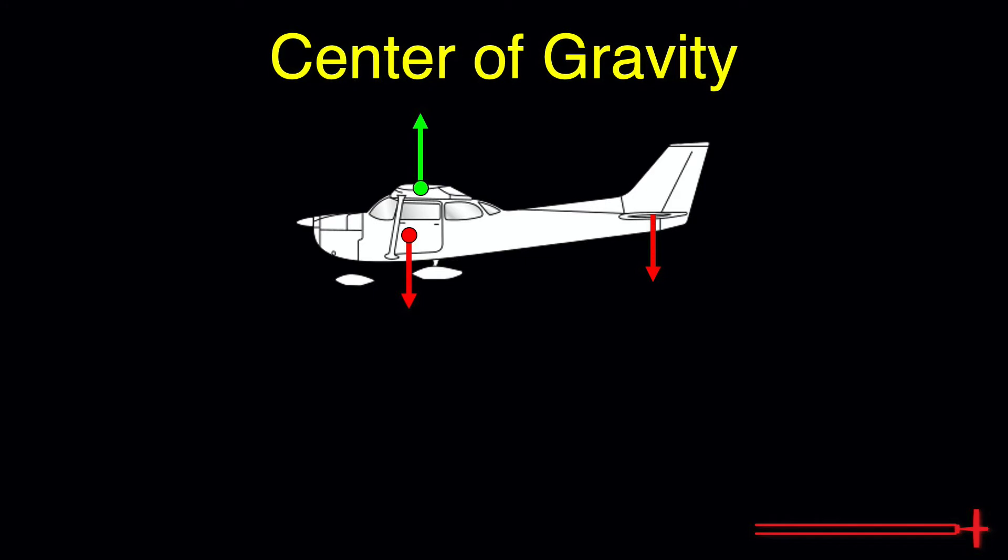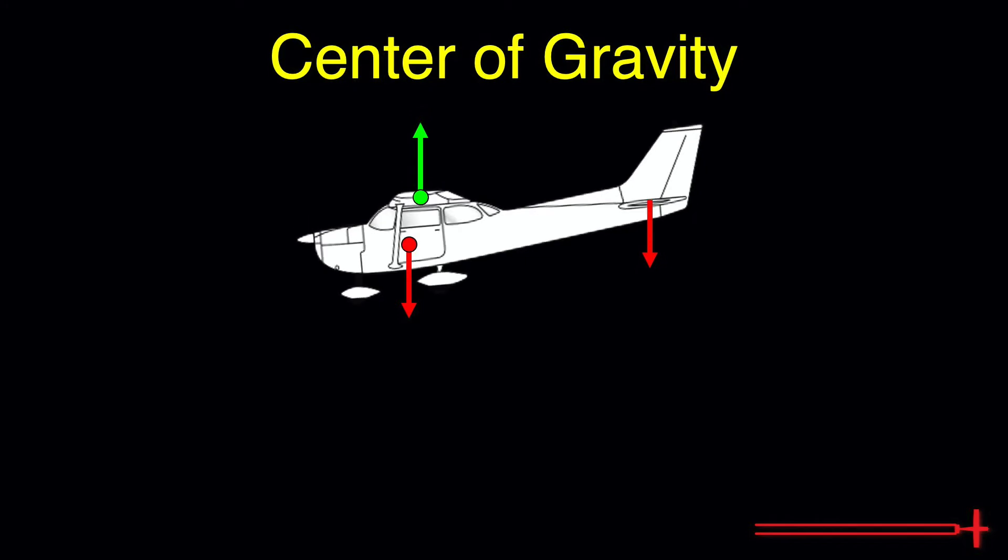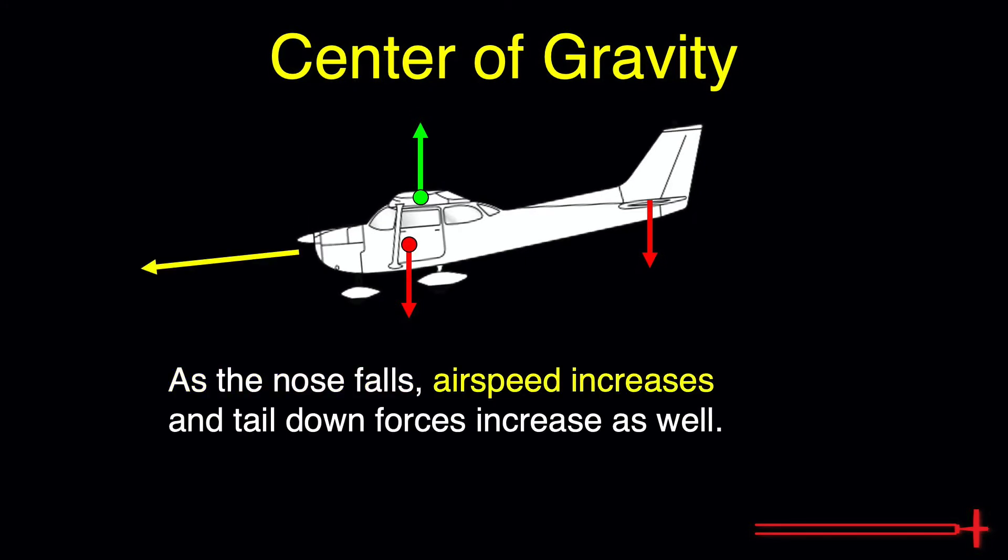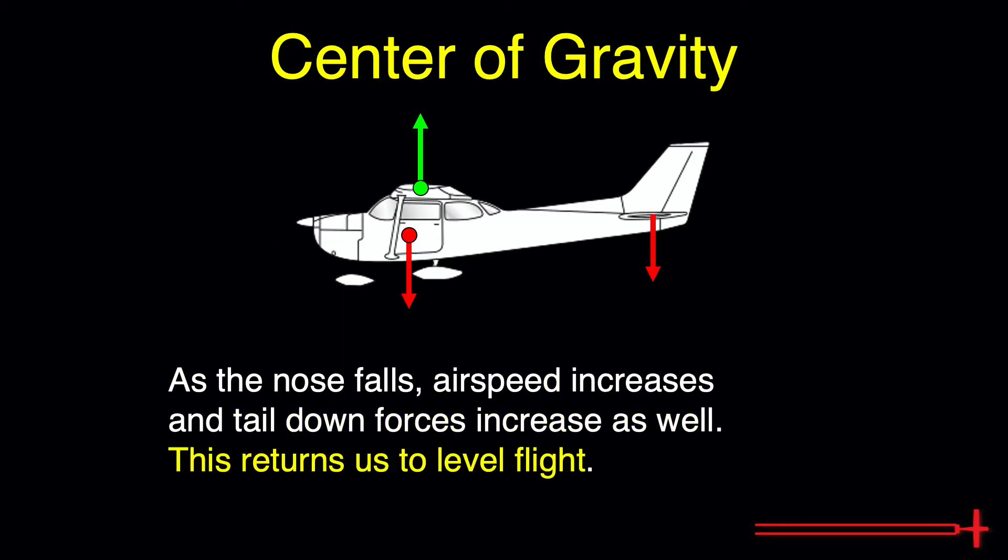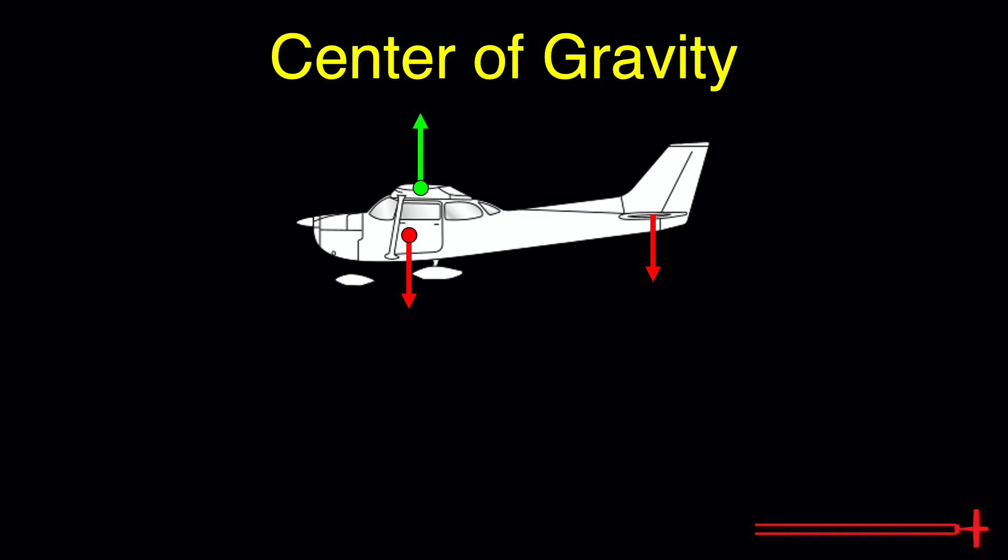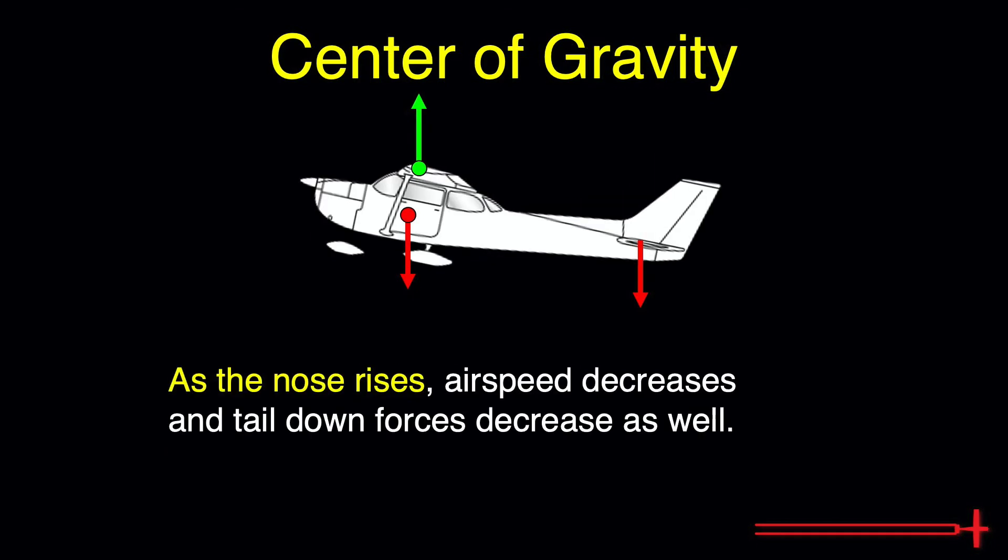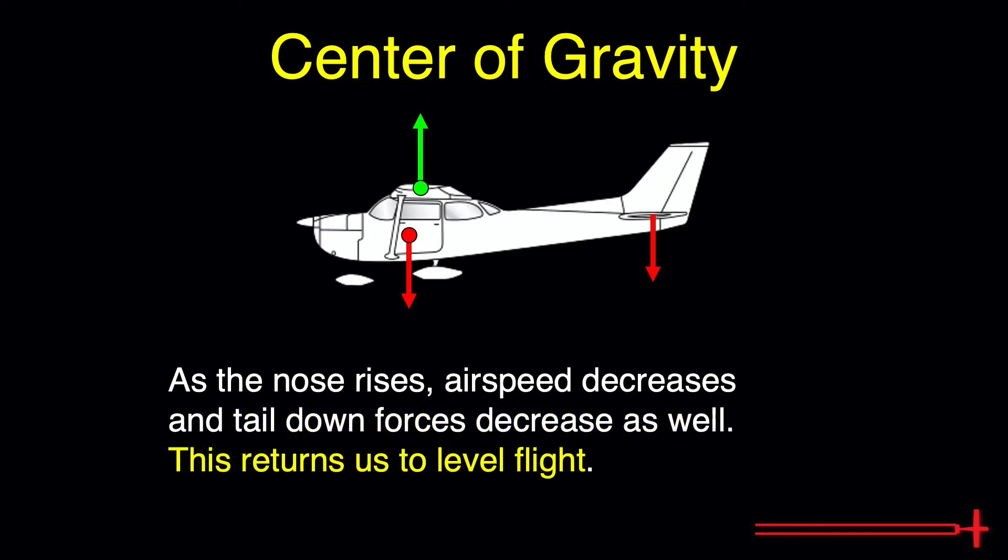Let's pretend we are flying along and we allow the nose to drop. As the nose falls, airspeed increases and the tail downforce increases as well, bringing the nose back up and returning us to level flight. By the same design, if the nose gets too high, airspeed decreases, less negative lift is produced, and we again return to level flight.